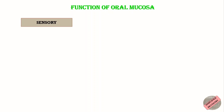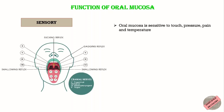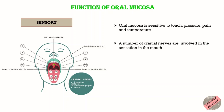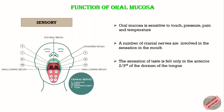The third function is sensory. The oral mucosa is richly innervated, meaning it is very good at sensing pain, touch, temperature, and taste. A number of cranial nerves are involved in sensation in the mouth, including the trigeminal, facial, glossopharyngeal, and vagus nerves. The sensation of taste is a unique sensation felt only in the anterior two-thirds of the dorsum of the tongue.